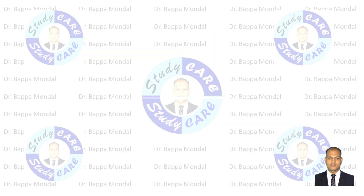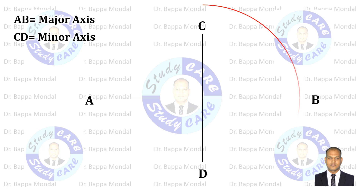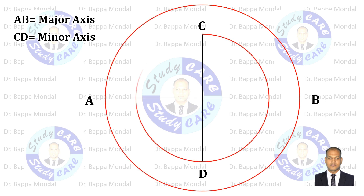First, draw major axis AB and minor axis CD as per the given dimensions. Then draw two circles taking the diameter as AB and CD. For both circles, the center is O. Thus the method name is concentric circles.